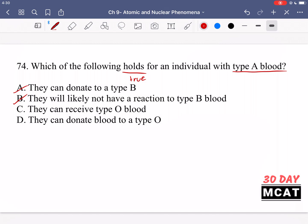Option C is saying they can receive type O blood. This is correct. So type O blood does not have A or B antigens. Therefore, when type A or B or AB receives this type of blood, they don't have any reaction with their antibodies against this blood that they're receiving. So O is a universal donor. So type A can receive it. That's correct.